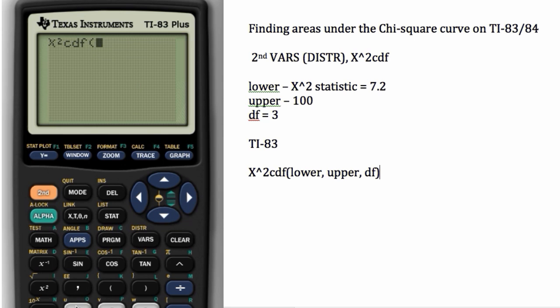So in this case, we're going to enter 7.2, comma, 100, comma, 3. And then hit enter. And this gives us the same answer.